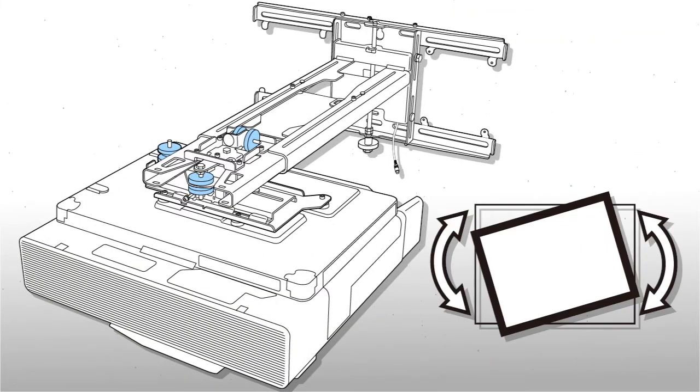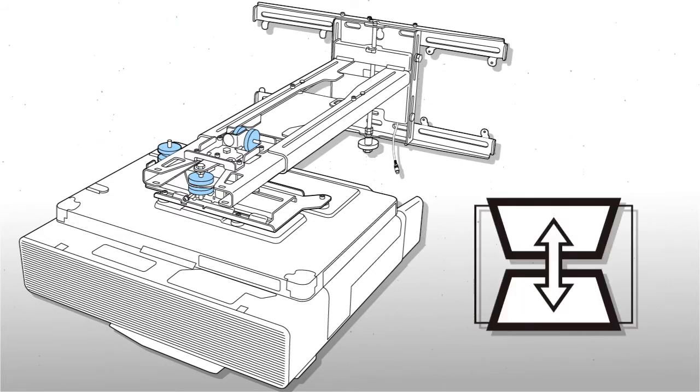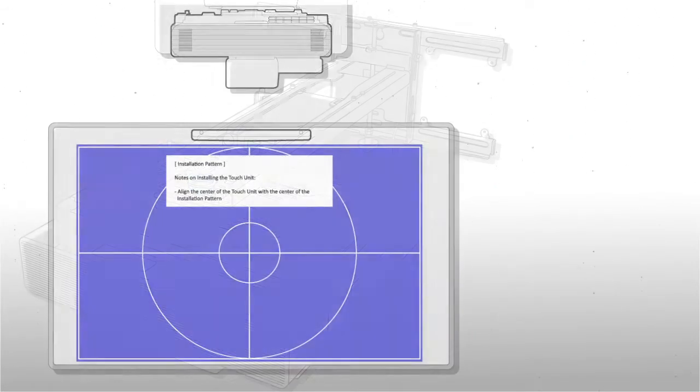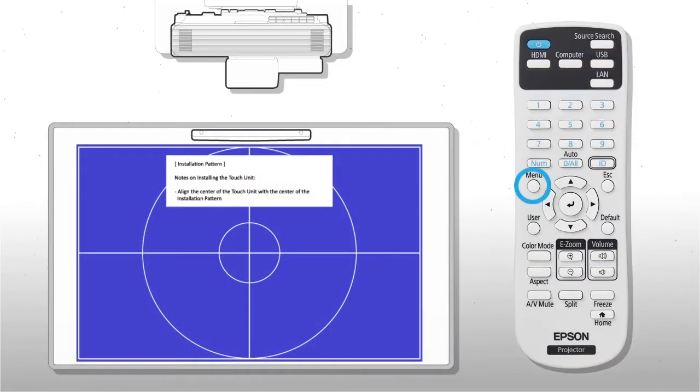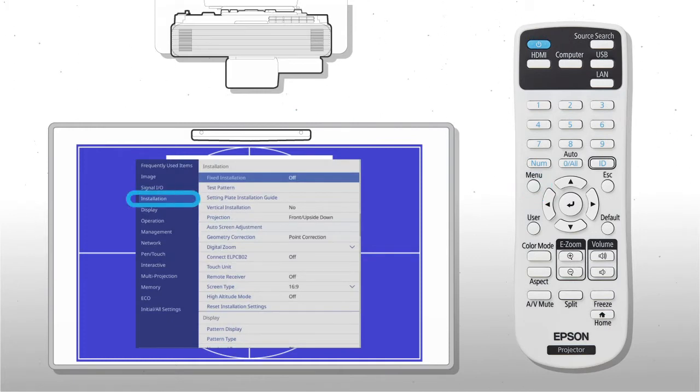Next, adjust the roll, pitch, and yaw as needed to get the image squared. See the projector's on-screen help for further assistance.